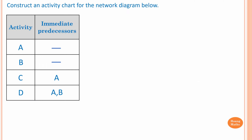Sometimes it is hard to draw a directed network, and this is one of them. The reason is that Activity C and Activity A have the same immediate predecessor — that is Activity A — but only Activity B is an immediate predecessor of D. So in order to draw this, we need a Dummy Activity.